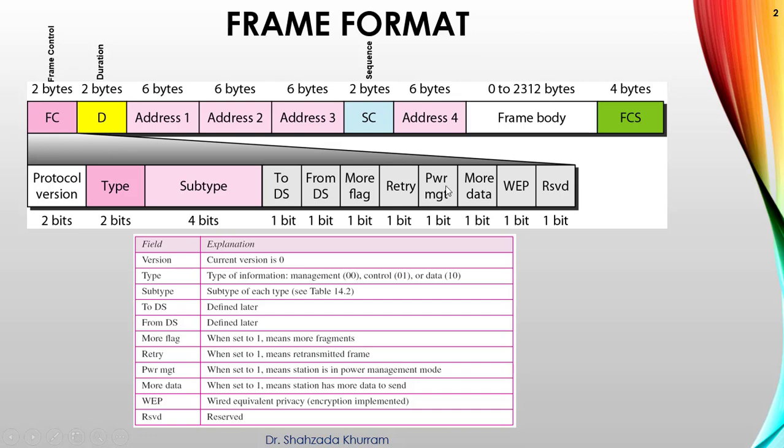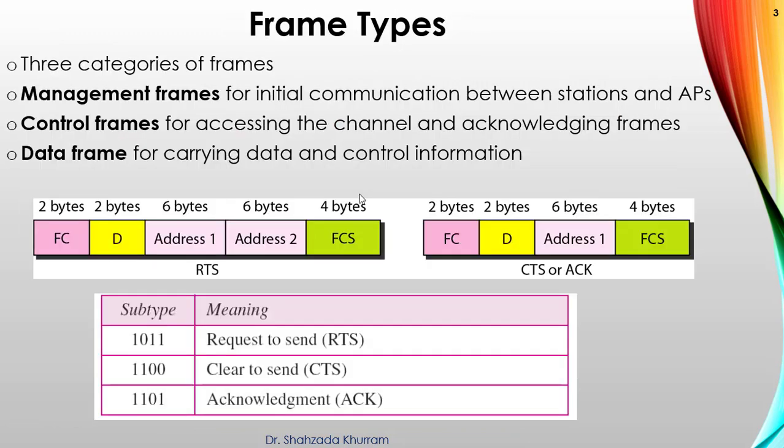Okay, let's discuss further. First of all, there is three type of frames. One is management frames for initial communication between stations and access points. Second one is control frames for accessing the channel and acknowledging the frames. Third one is data frame for carrying data and control information.